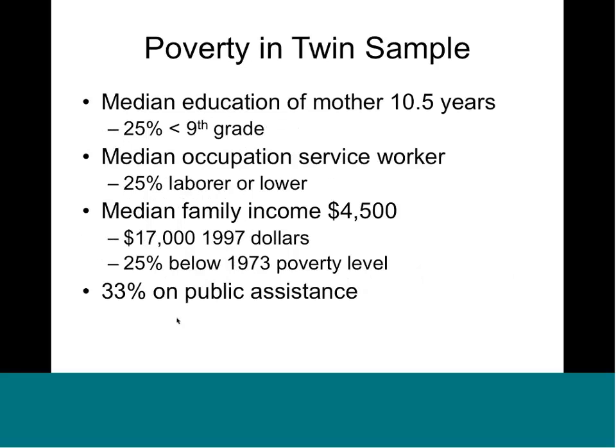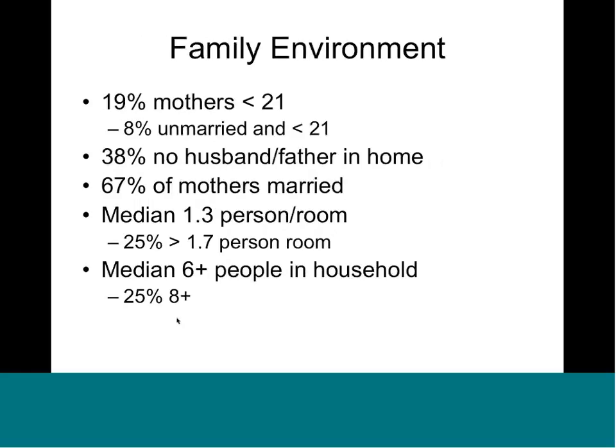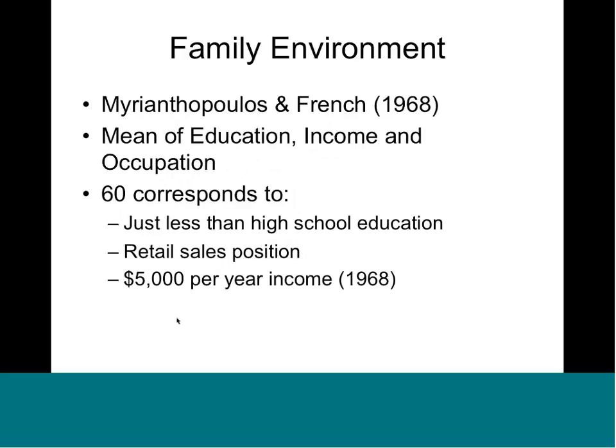What was most interesting about these twins is that a lot of them were from poor families, making them very unusual. The median education of the mothers was only ten and a half years. A quarter had less than ninth grade education. There were high proportions of teen moms, unmarried moms, kids living in crowded households. They had a socioeconomic status score — a typical composite of education, income, and occupation rating.